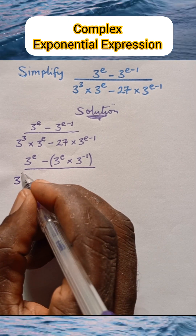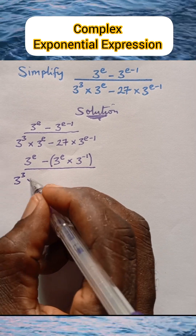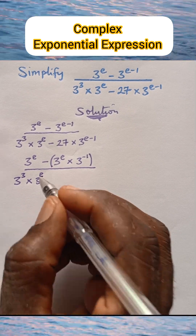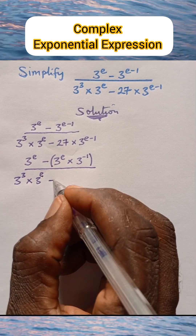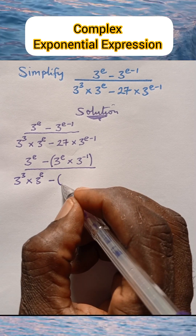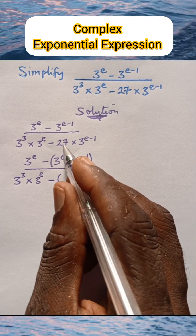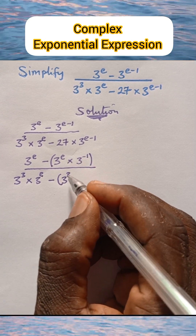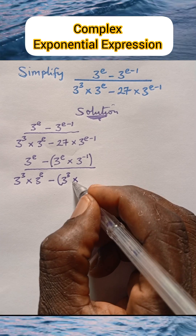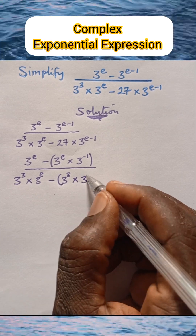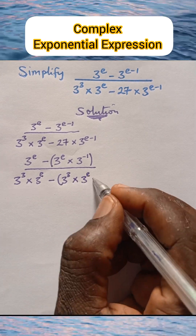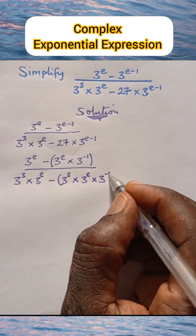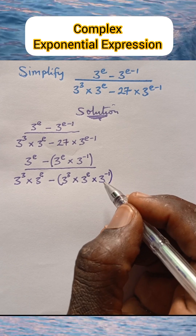In the denominator, we have 3 raised to the power of 3 times 3 raised to power e, minus 27 — which can be written as 3 raised to the power of 3, which is the same thing as 27 — times 3 raised to power e times 3 raised to power negative 1.